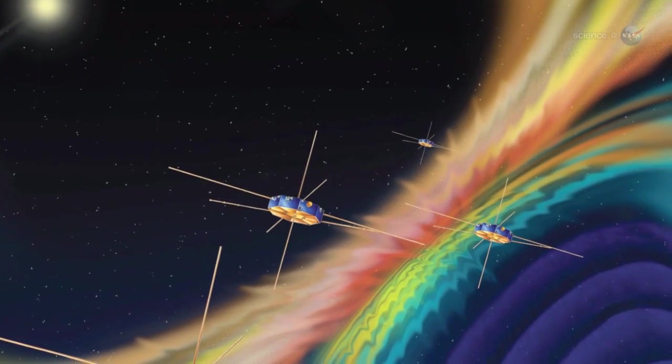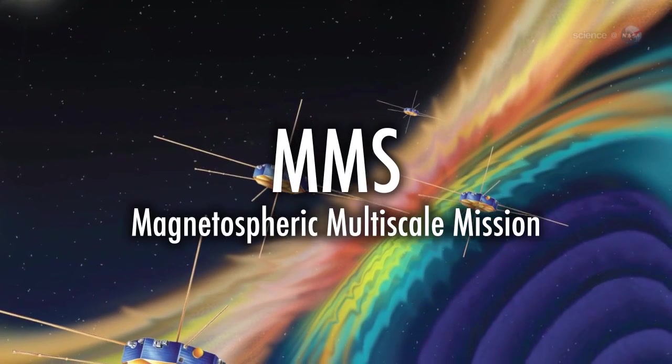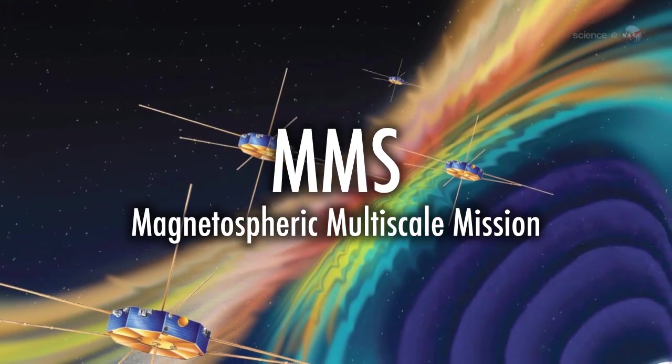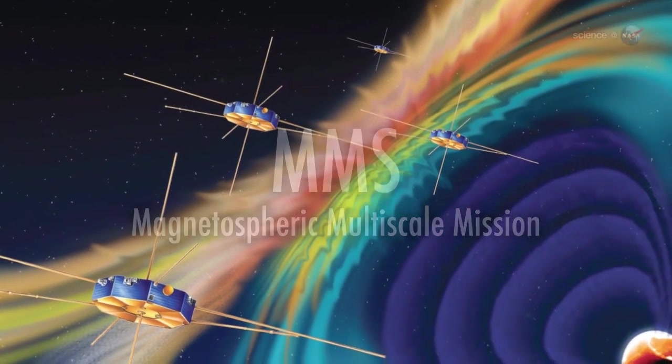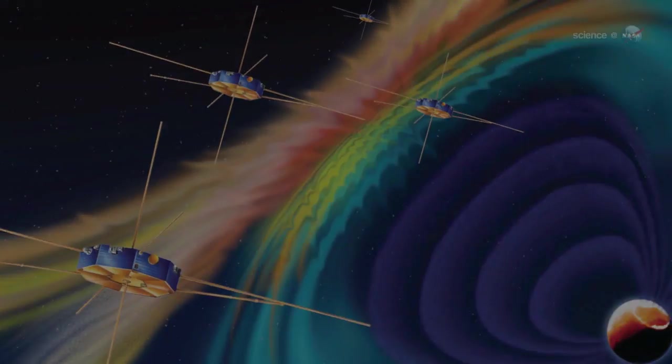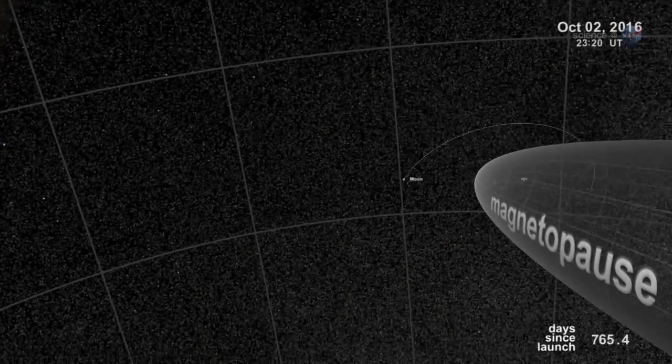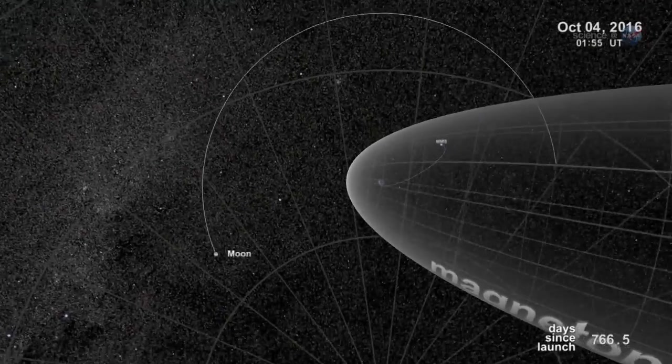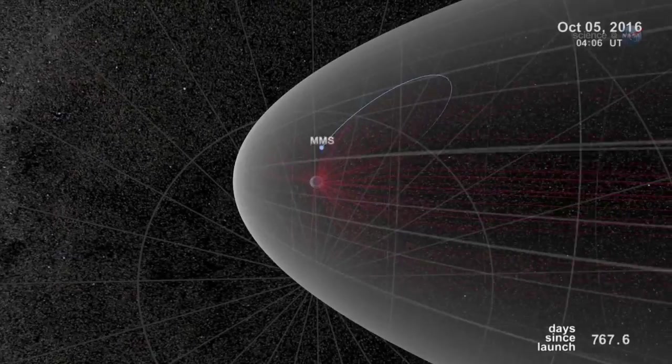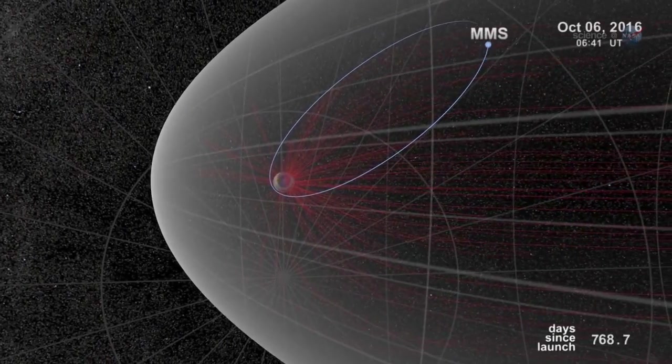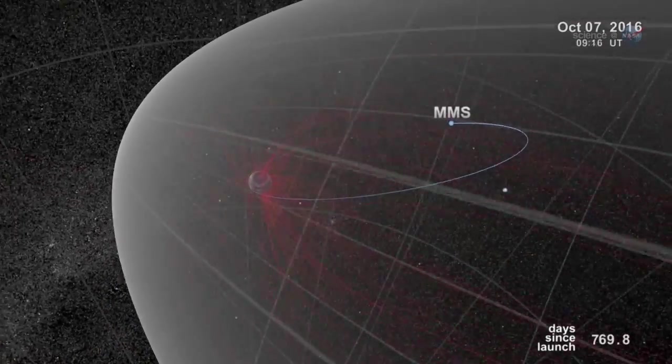NASA is planning a mission called MMS, short for Magnetospheric Multiscale Mission, due to launch in 2014 to study the phenomenon. Bristling with energetic particle detectors and magnetic sensors, the four spacecraft of MMS will spread out in Earth's magnetosphere and surround the portals to observe how they work.